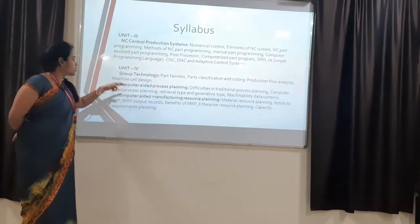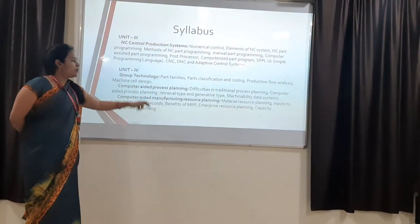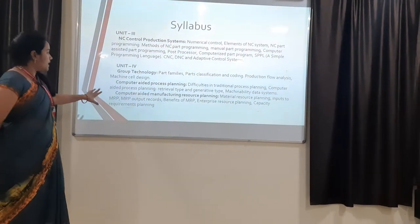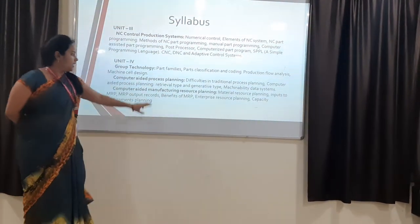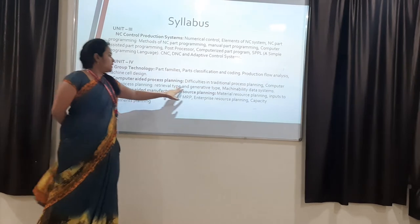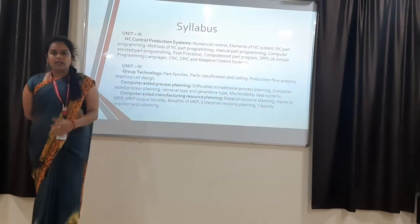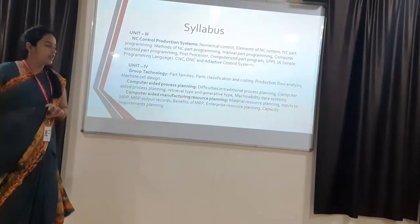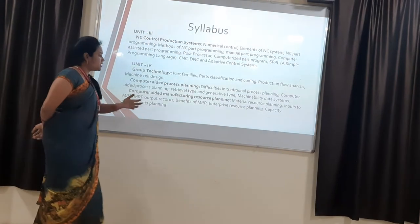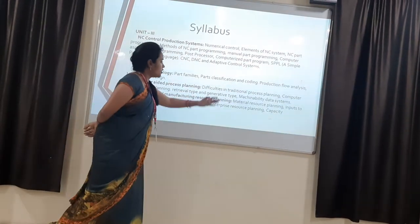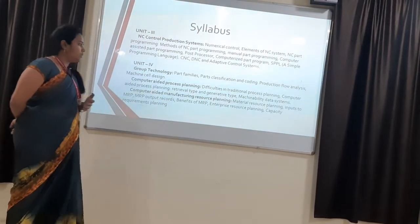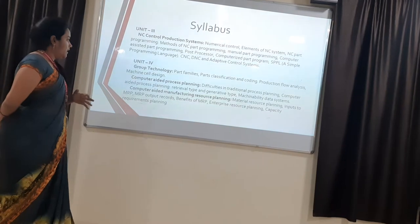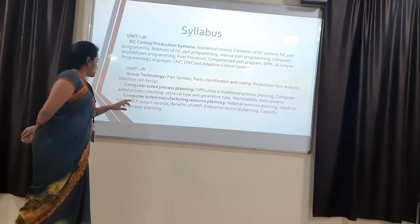Next topic is Computer Aided Process Planning. In CAPP, there are mainly two types — the variant type and the generative type. In the variant type, we are able to modify and change the process. But in the generative type, one process is taken and that process is continued till the end. Next is machinability data systems.